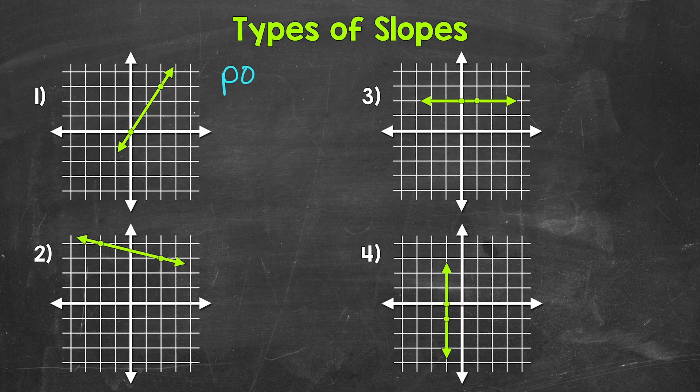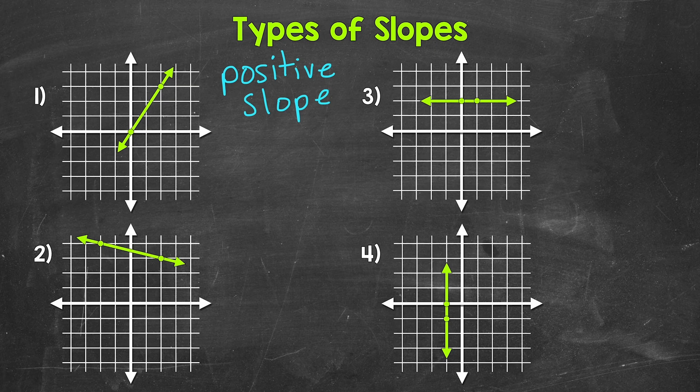This is a positive slope, and that's our first type of slope. Now let's find the slope of this line. Remember, slope equals rise over run — the vertical change over the horizontal change.